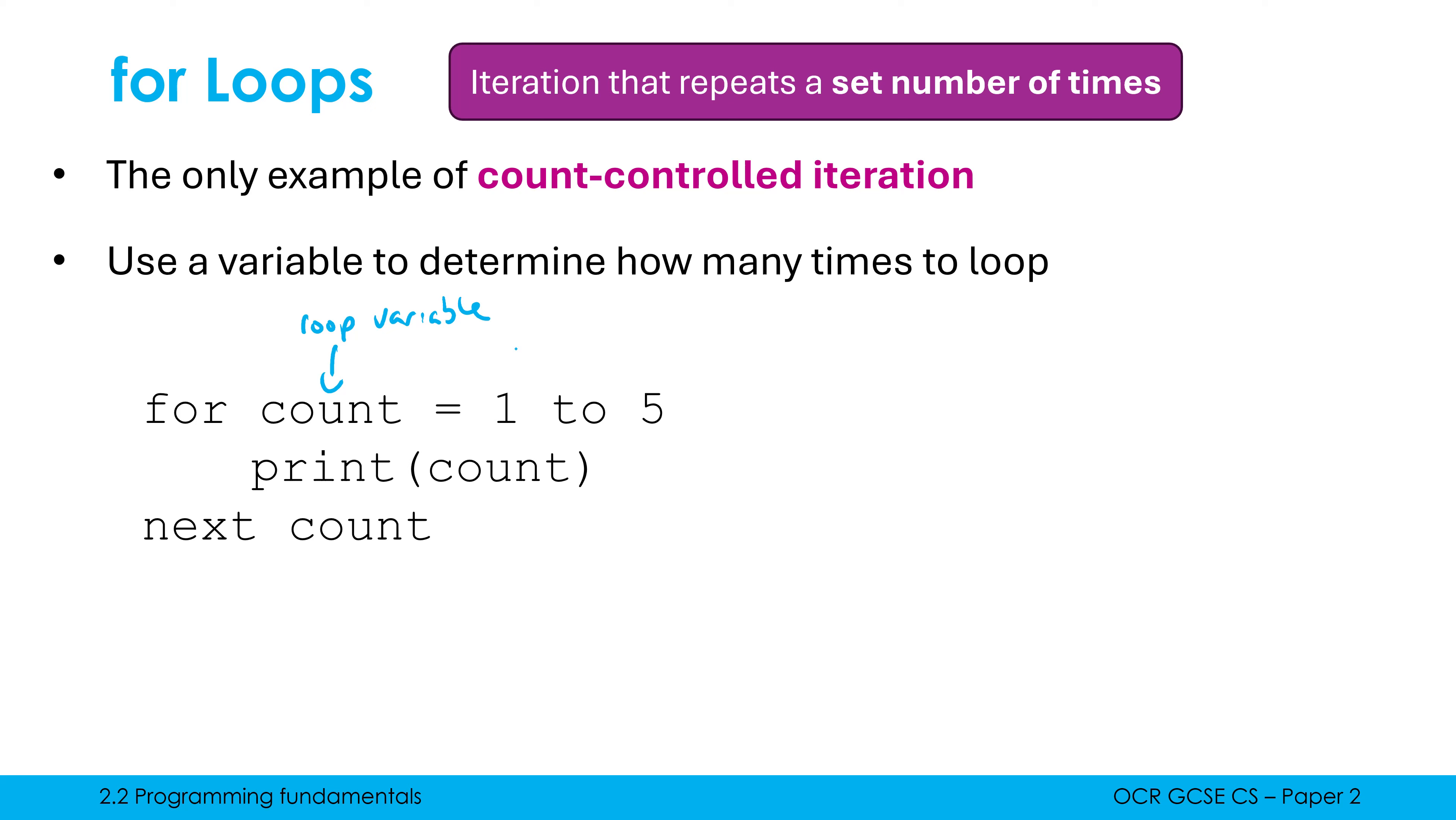We then assign it to be one, so this is our starting point for our loop variable. It's going to start at one in this particular loop, and five is our endpoint. And in OCR's version of this for loop, this is inclusive, so count is going to reach five and stay there.